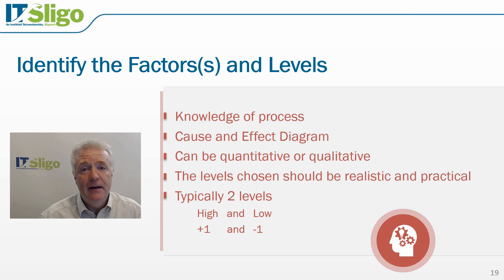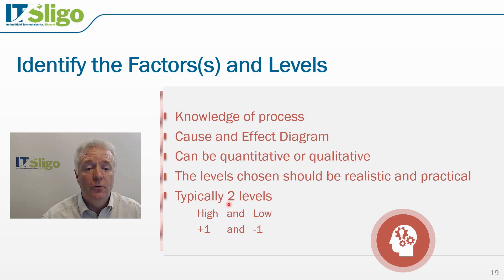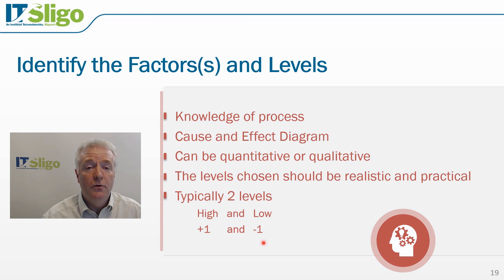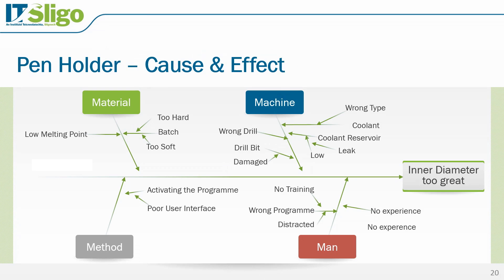We will typically evaluate the factors at two levels, referred to as high and low. For example, if we're testing at 100 degrees, it could be referred to as the low level, while 120 degrees could be referred to as the high level. We will also more commonly refer to these via their coded variables — minus 1 would refer to the low level and plus 1 would refer to the high level.